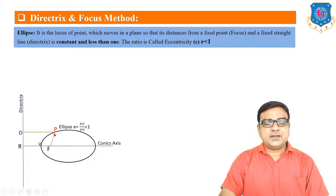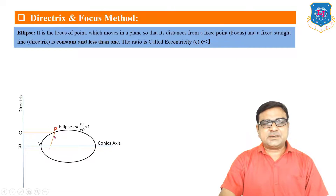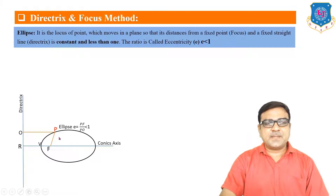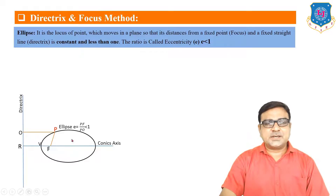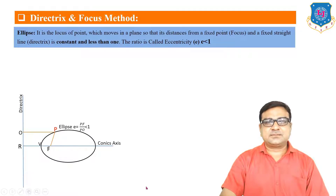If you take any point P on the ellipse, the ratio of PF distance divided by PO distance is always less than one. For any point on the ellipse, this ratio will be constant and is always less than one.